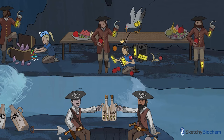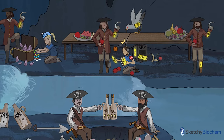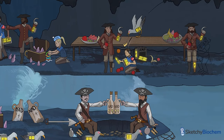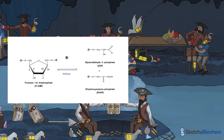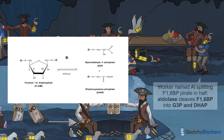Up until this point, we've dealt with a single 6-carbon molecule of either the glucose or fructose variety, but that's about to change. We have this innocent molecule of F1,6-BP that's effectively split in half. Big Al here demonstrates the proper technique used to separate the top half from the bottom half of our F1,6-BP pirate.